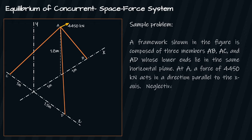A force of 4450 kilonewton acts in a direction parallel to the x-axis. Neglecting the weights of the members, determine the forces in AB, AC, and AD.